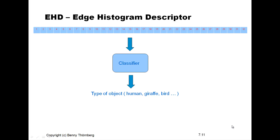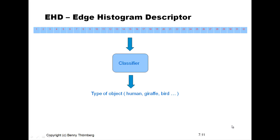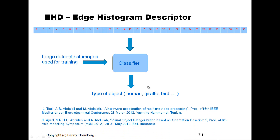We feed this larger descriptor into a computerized classifier, which should then be able to distinguish between different objects such as a human, a giraffe, a bird, or whatever. Of course, we need to train this classifier using a large dataset of images. If you want to read more about the development of the edge histogram descriptor — which was also selected as the descriptor used for the MPEG-7 standard — I have selected scientific references. The first one also focuses on implementation issues: how to implement the computation of such a descriptor in hardware on an FPGA platform.